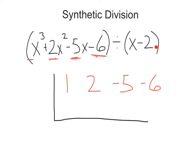Then we want to take whatever is dividing into that — here x minus two — and we're actually going to take the opposite of this term. So since this is x minus two, we want to go ahead and divide by positive two. If it was x plus two, then we would use negative two here. We're always going to take the opposite.